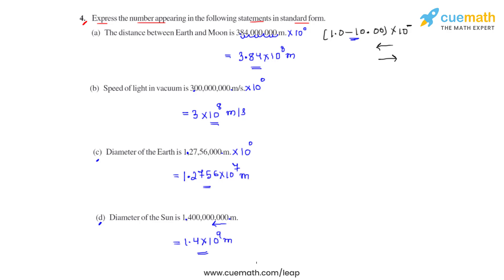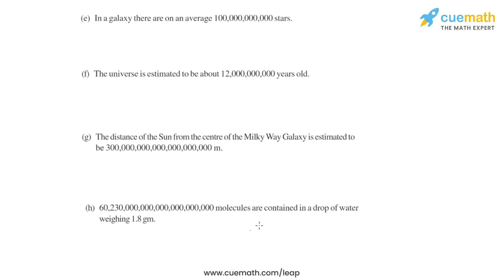Part E gives us that in a galaxy there are on average so many stars. This number is to be converted into standard form to make it easier to read. The decimal, currently after the last zero, should be moved between 1 and 0. The decimal moves towards left by 11 places, so the answer will be 1 × 10¹¹. This is the number of stars in a galaxy on average.